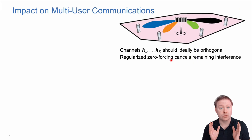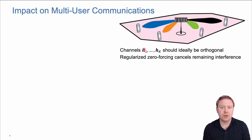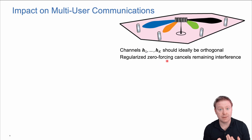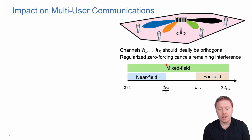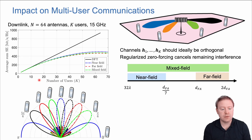Let's look at the impact on communications. In a multi-user scenario with N antennas at the base station and K users, we want their N-dimensional channel vectors to be orthogonal to each other. If they are not, they cause interference, unless we use advanced precoding like regularized zero-forcing. The more orthogonal they are, the better the performance. We consider a far-field scenario from the Fraunhofer distance to twice that, a near-field scenario from twice the array length up to the Fraunhofer distance divided by seven, and a mixed-field covering the full range. The setup is a downlink with 64 antennas at 15 GHz.